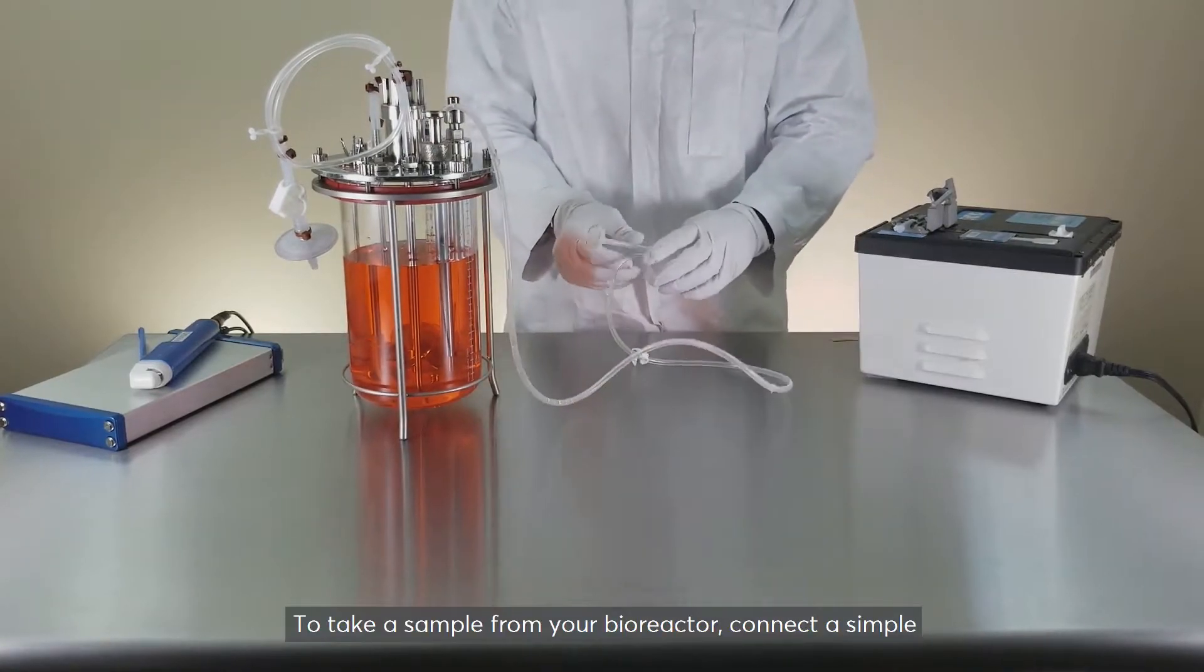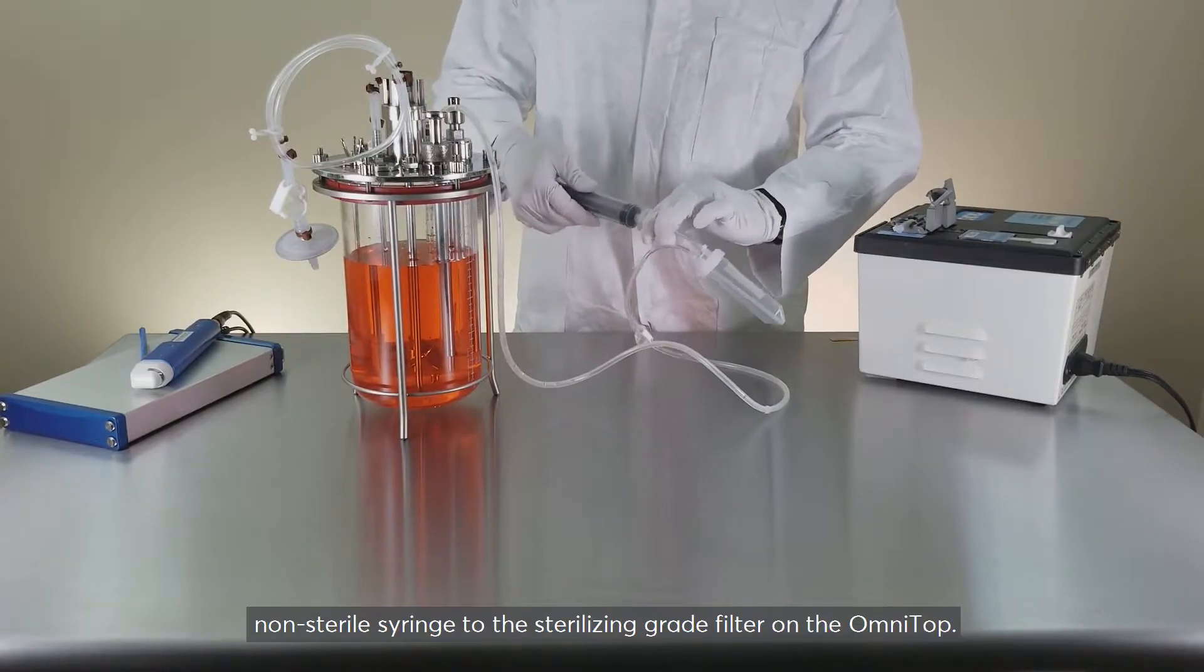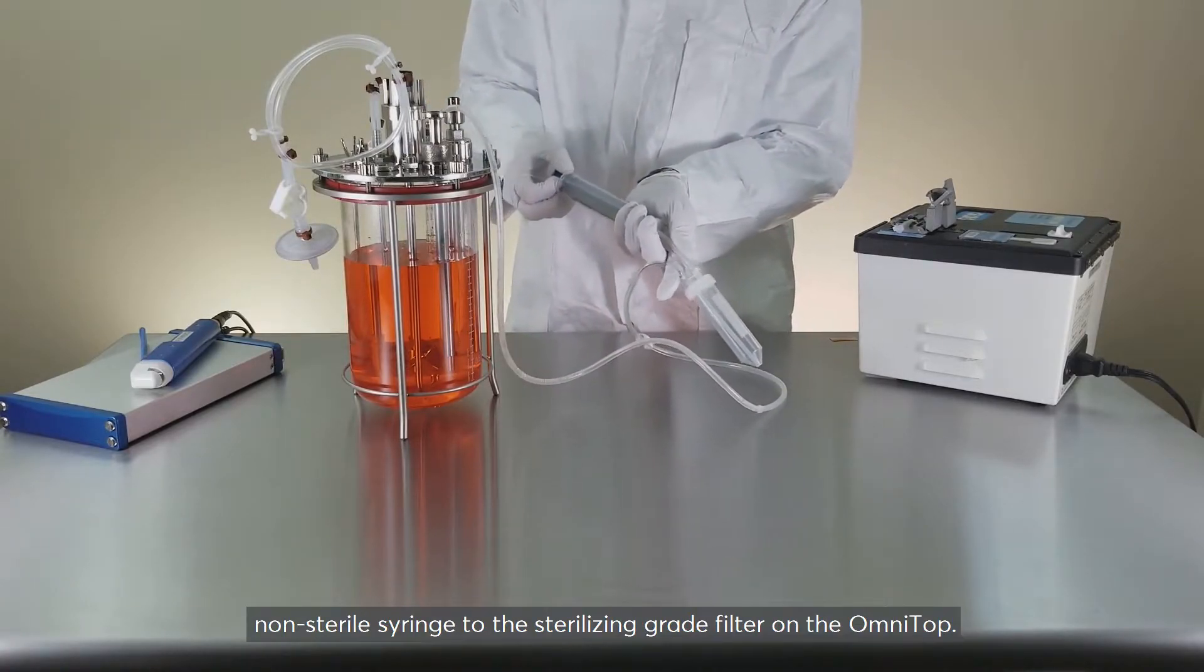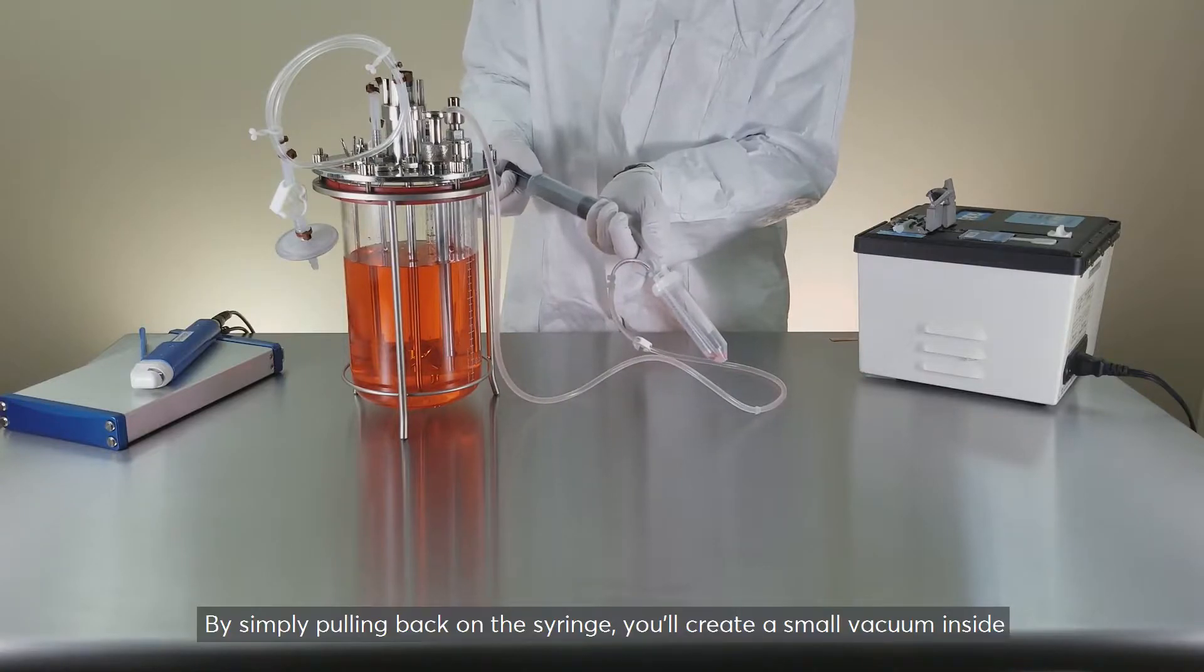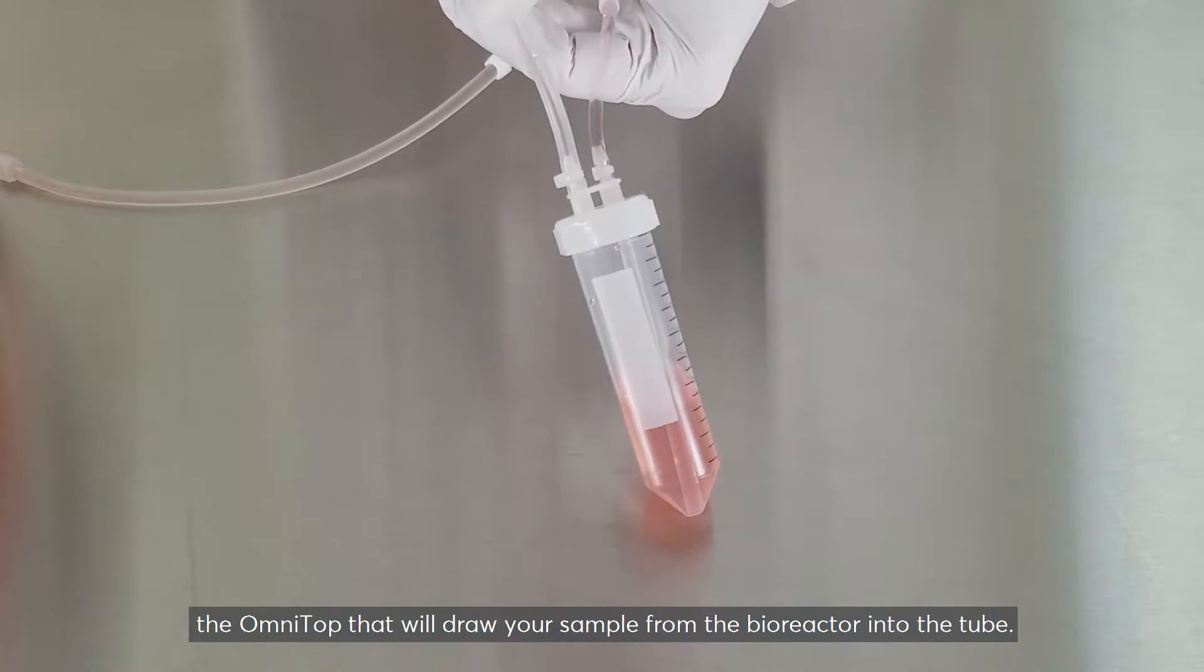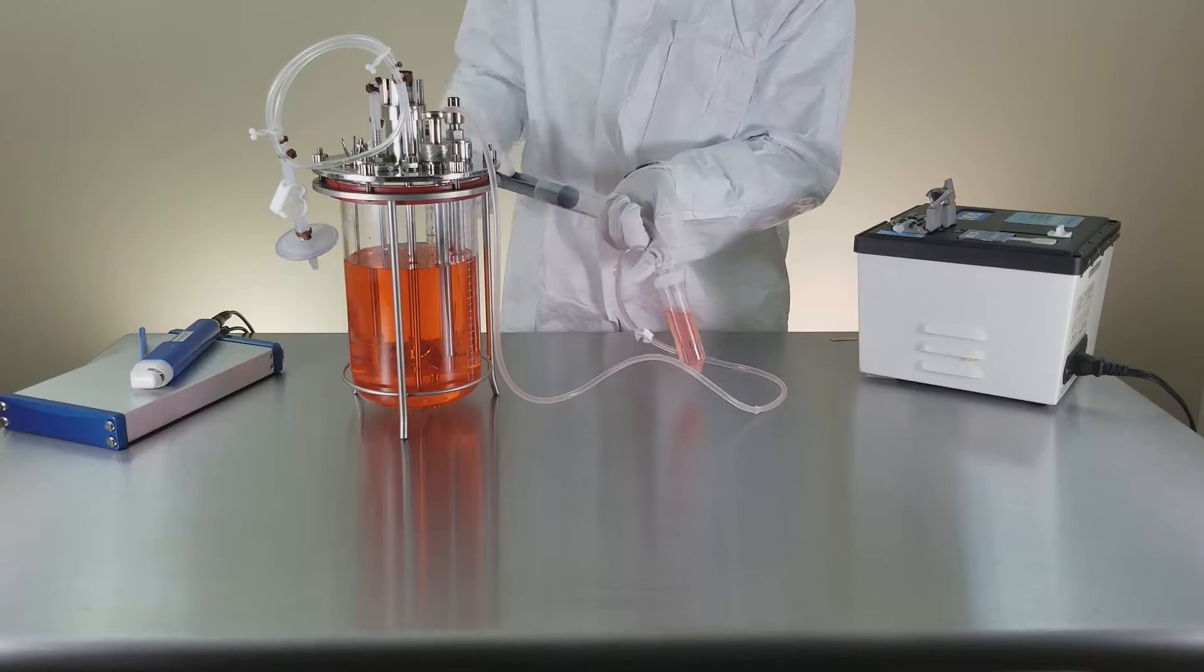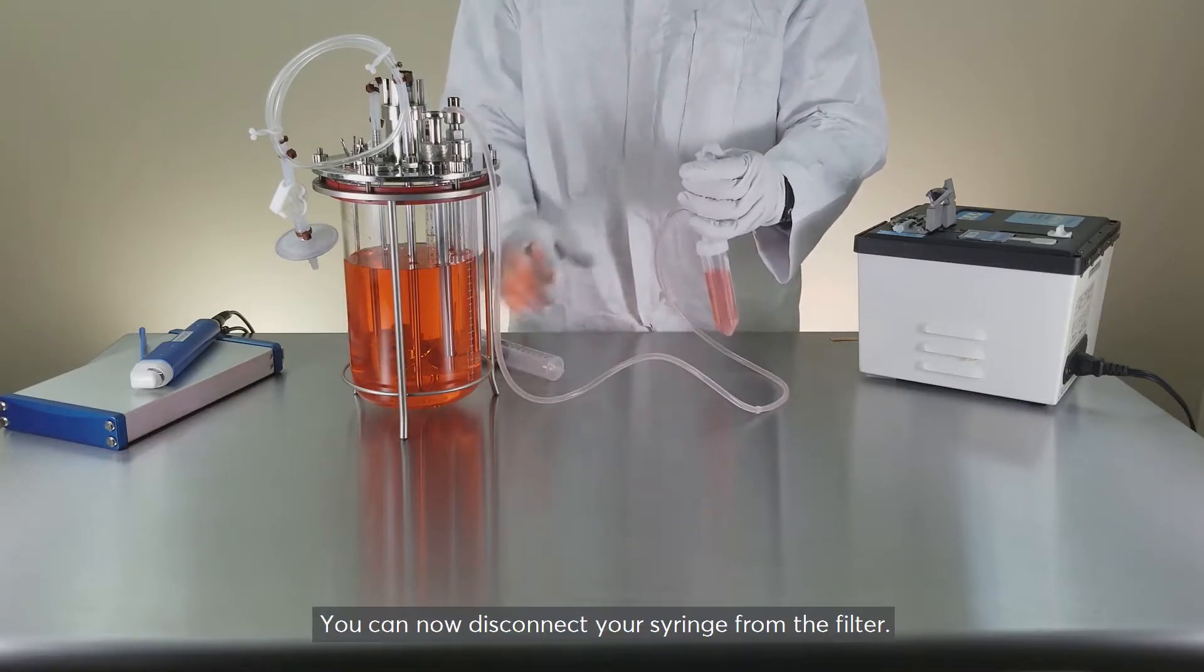To take a sample from your bioreactor, connect a simple non-sterile syringe to the sterilizing grade filter on the OmniTop. By simply pulling back on the syringe, you'll create a small vacuum inside the OmniTop that will draw your sample from the bioreactor into the tube. You can now disconnect your syringe from the filter.